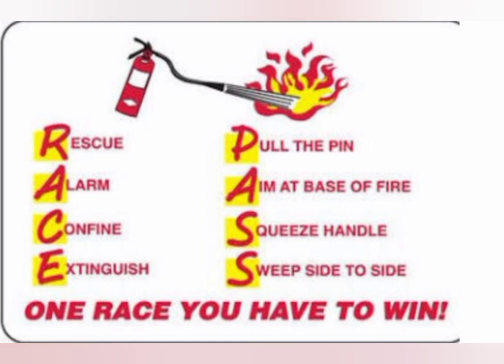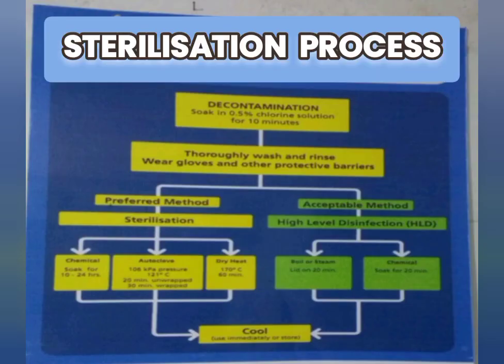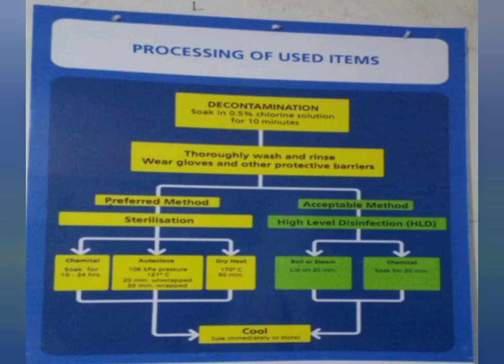The PASS protocol is used to decrease fire that has occurred in your HWC or workplace. The next important IEC material you need to display is the Sterilization Process — how contaminated waste, instruments, or equipment will be sterilized and discarded, and what different sterilization methods are used in your HWC. Everything needs to be displayed.